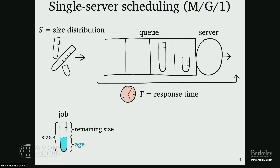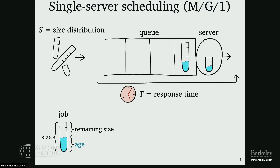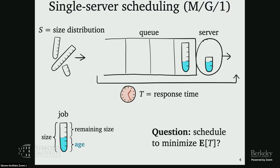We have an empty server and get to choose which job to serve next. When I say scheduling, I'm really talking about continuously making this decision — what job am I working on? I can decide to change my mind at any point and start working on a different job. So how should I schedule in order to minimize the average response time over all jobs?